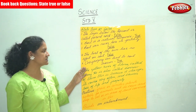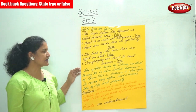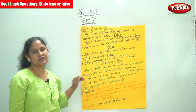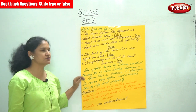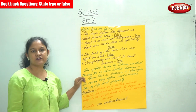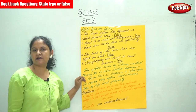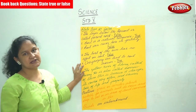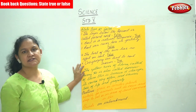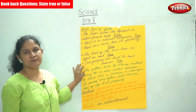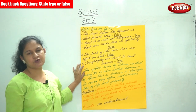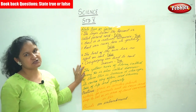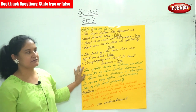The last statement is: overgrazing can lead to soil erosion — true. Overgrazing of cattle leads to soil erosion, and hence development of pastures for grazing of cattle needs to be done.